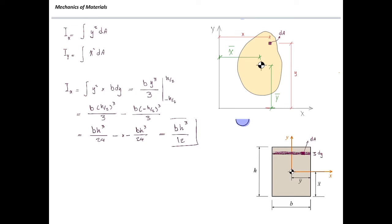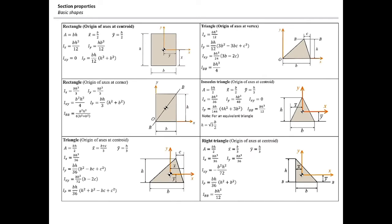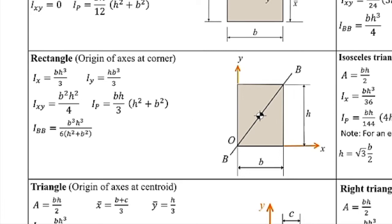That derivation showed how to use the integral equation. For other shapes, tables of precomputed values are available. For a rectangle, Ix = BH³/12. For other shapes and axes — triangles, circles, half-circles — values can be read from a standard table. For example, for a rectangle about the diagonal BB axis, the moment of inertia is b³h³ divided by (6(h² + b²)).